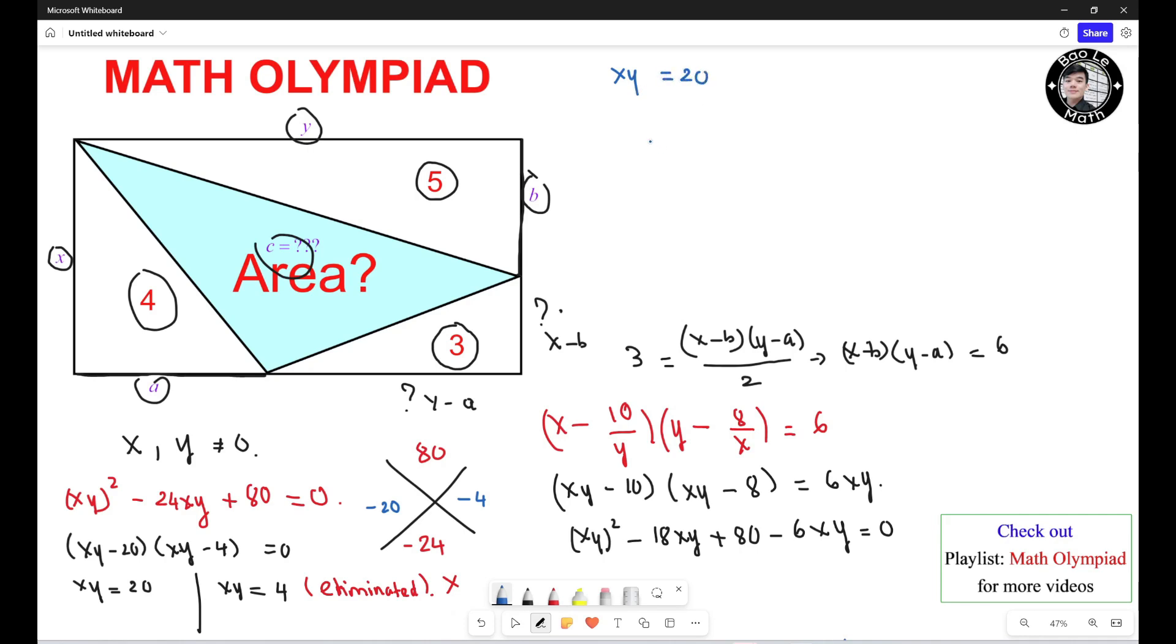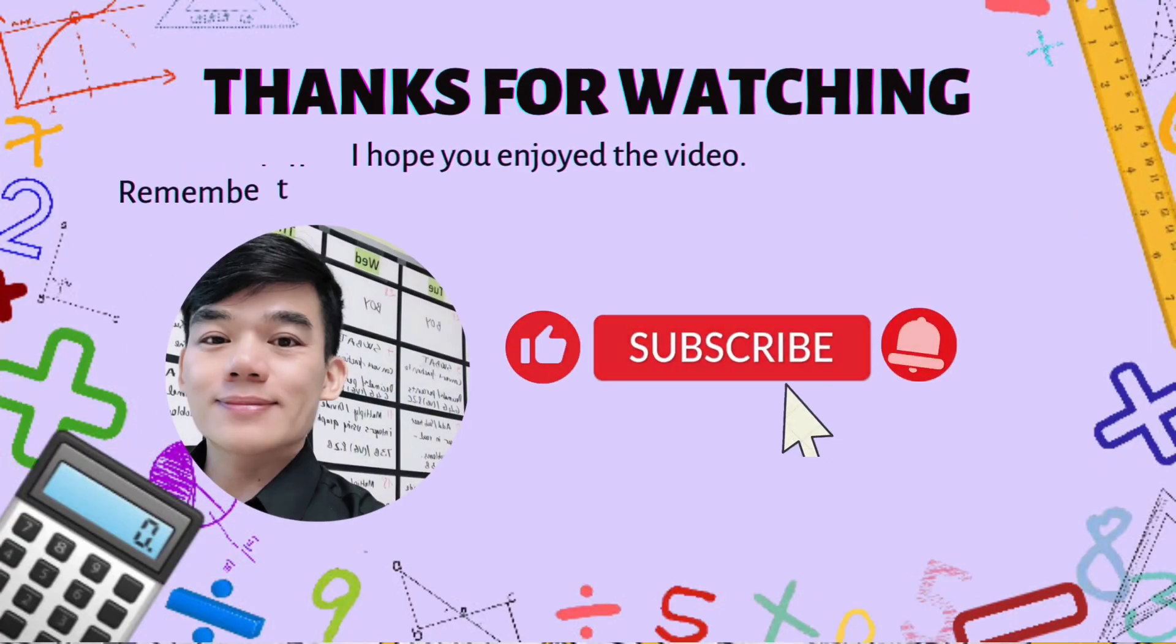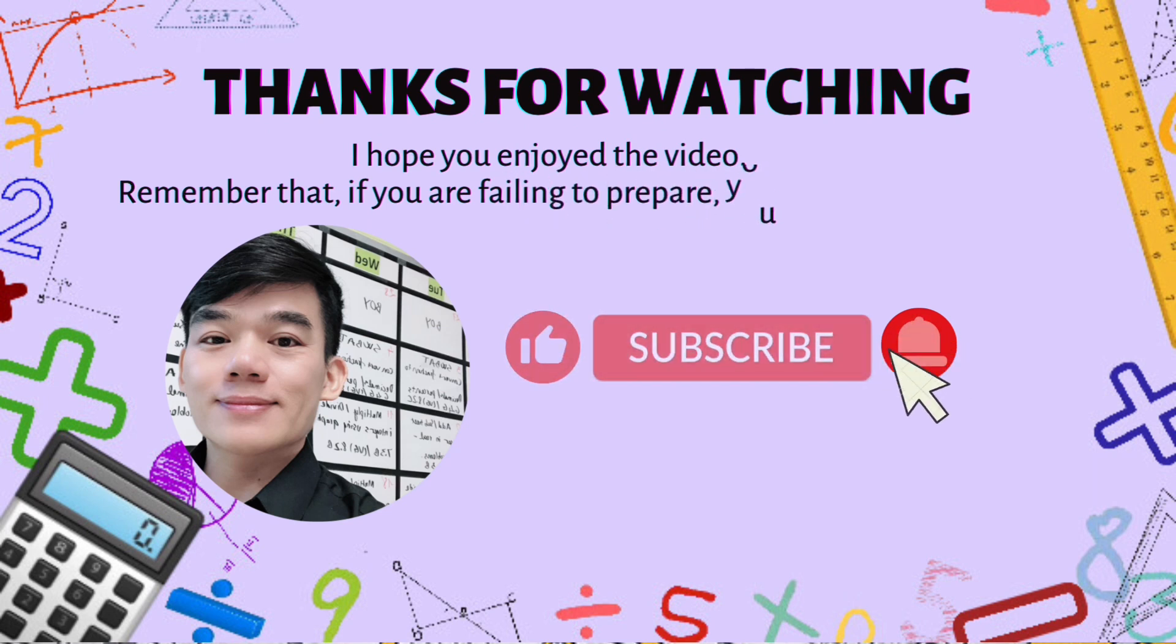So now SY equals 20. Alright so SY equals 20 which is C plus 3 plus 4 plus 5 equals 20, so this must be equal 8. And it's a good time to stop. Thank you for watching. I hope you enjoyed the video. Remember that if you're failing to prepare, you're preparing to fail.